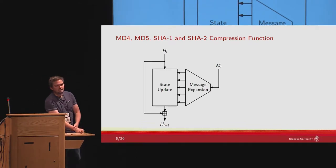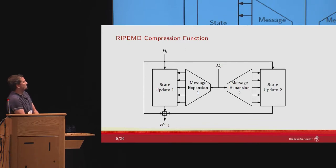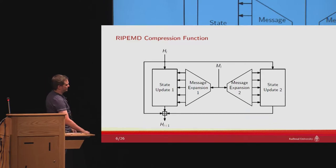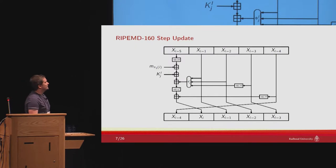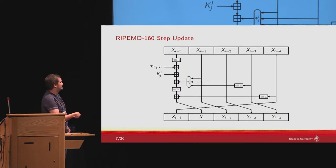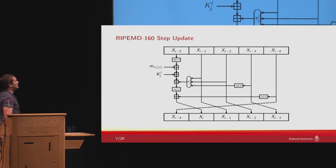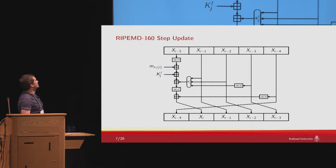If we look at RIPE MD, the situation gets more complex. Basically we have two state update functions and two message expansions which work on the same state and which are merged together at the end of the compression function. RIPE MD is an ARX function, so within one step, one of the five state words is updated using modular additions, rotations, and a bitwise Boolean function which changes depending on the current step. There is also a constant addition, and per step one word of the expanded message is added to the state.